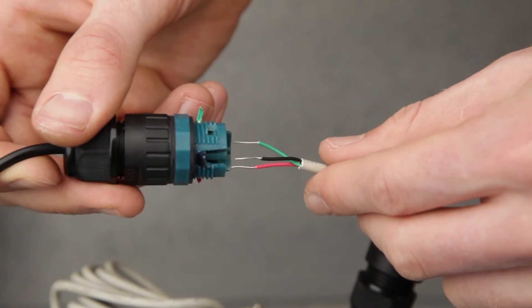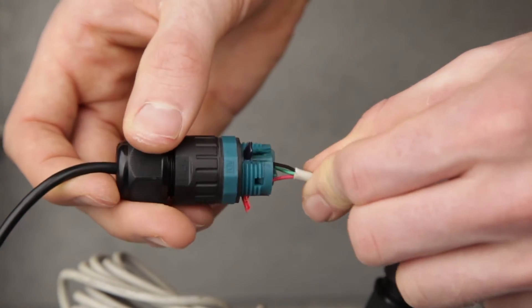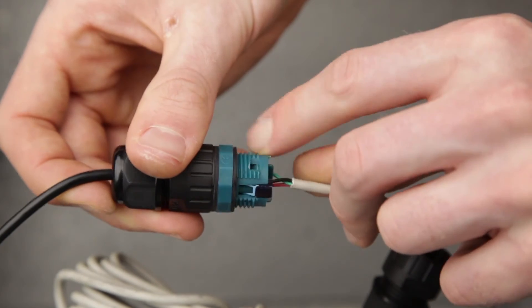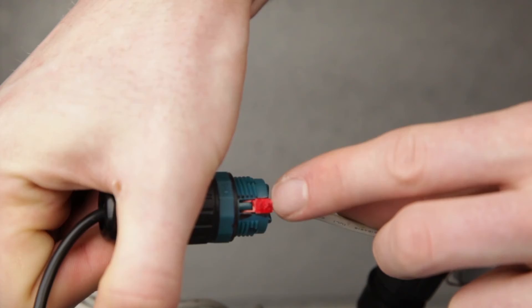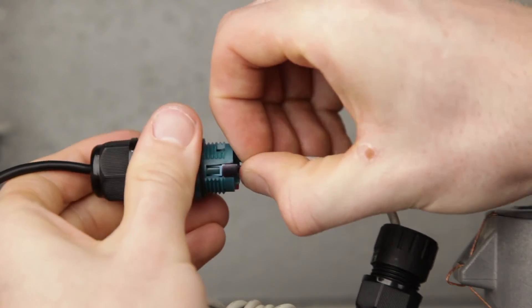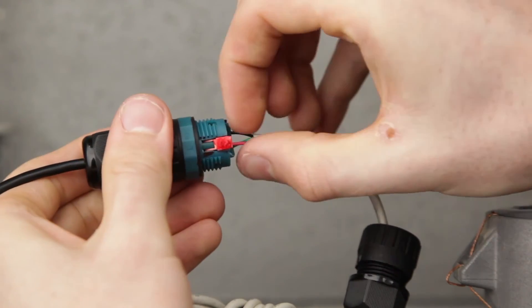Insert the three wires into the terminals and snap the levers closed. Make sure that the color of the wire matches the terminal and that the wires are pushed fully to the bottom. Tug on each wire to make sure it's secured.